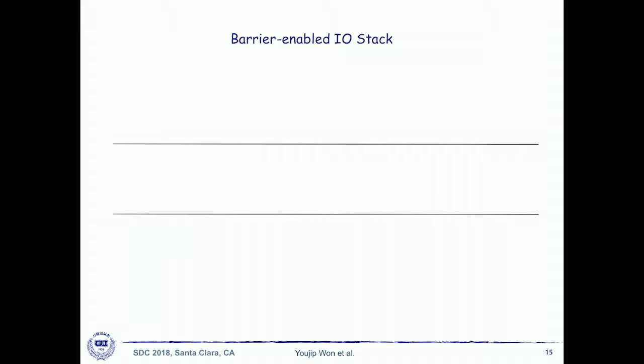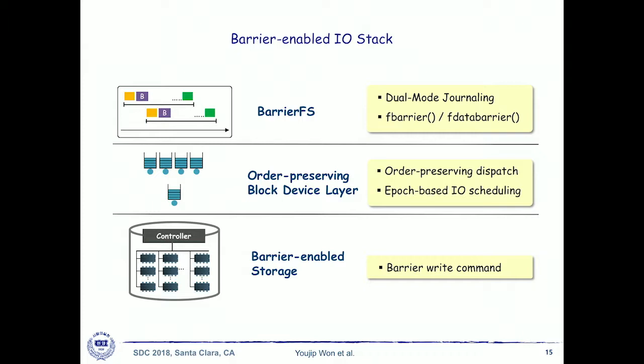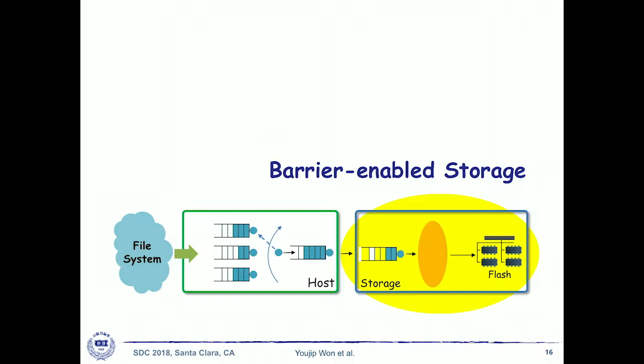We overhauled the entire stack from flash firmware algorithms to the file system. There are three themes: first, barrier-enabled storage; second, making the block device layer order-preserving; and third, slightly changing the file system based on the order-preserving block device layer. We will show how applications can benefit.